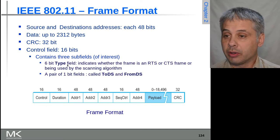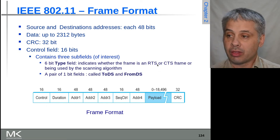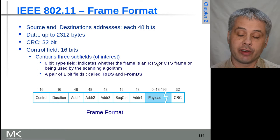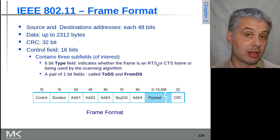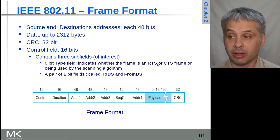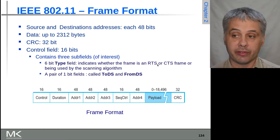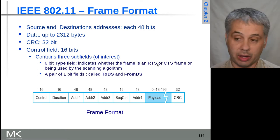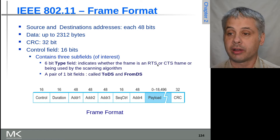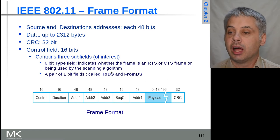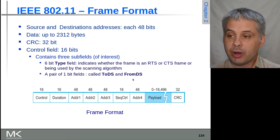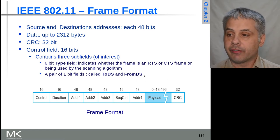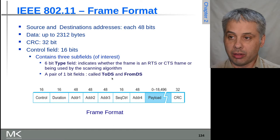One subfield is a six-bit type field, which tells us whether a frame is going to be a CTS frame, an RTS frame, a data frame, or used for beacons. There are also two one-bit fields: 'to DS' and 'from DS', where DS stands for distribution system.